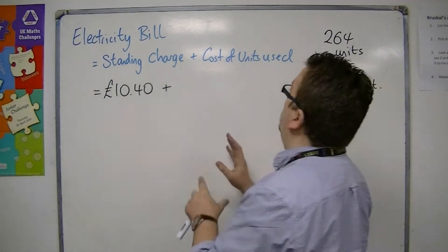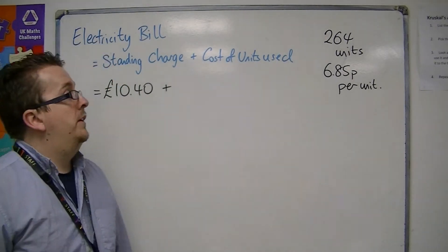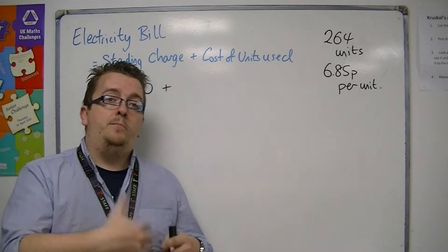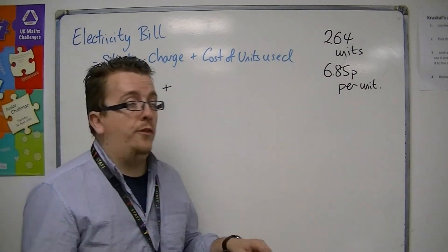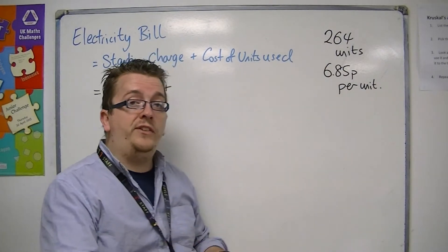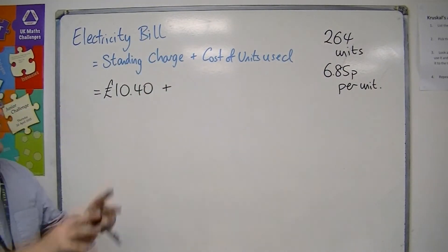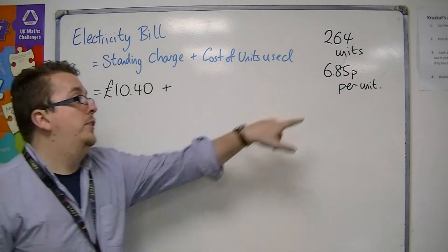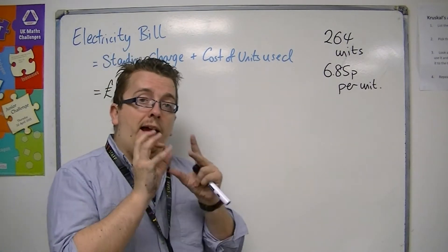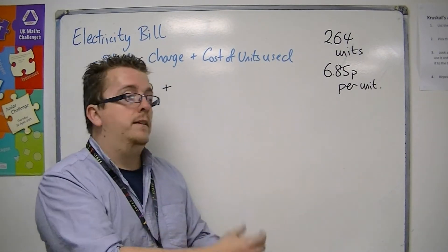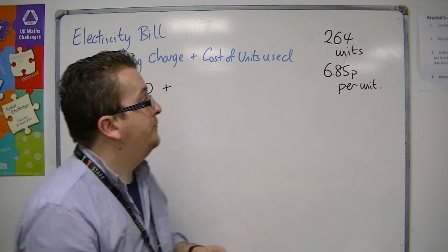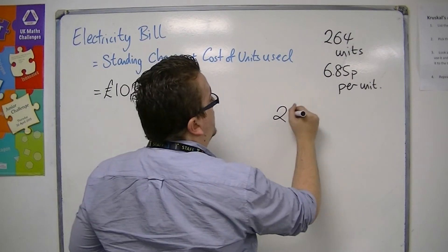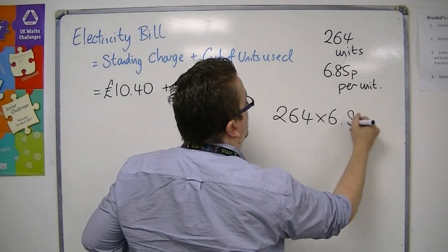You also have to pay for the cost of the units that you've used. Electricity is made up of units in how you pay. So let's say that you've used 264 units this quarter and it costs 6.85 pence per unit. On your bill it would likely say how much of a penny the actual unit costs. So we need to work out how much these units have cost — we need to work out 264 times 6.85.